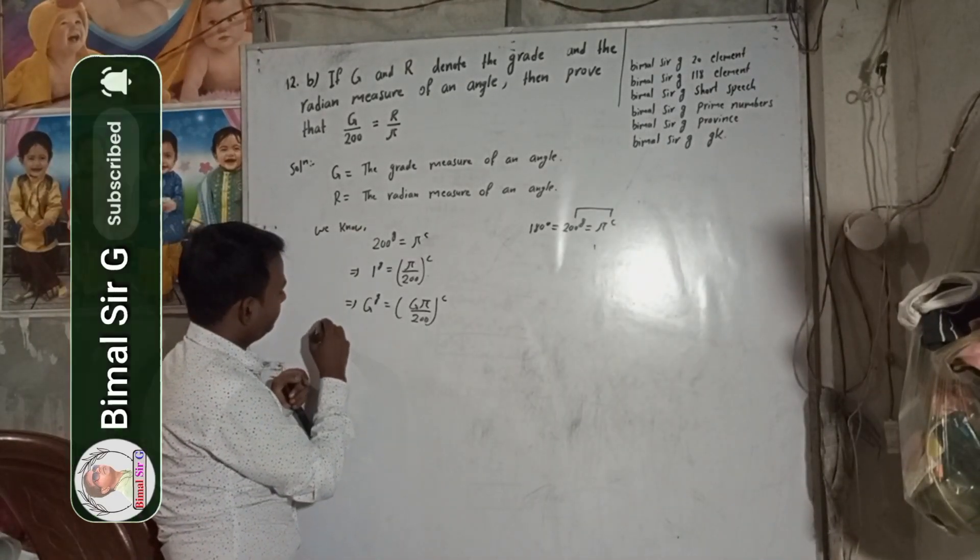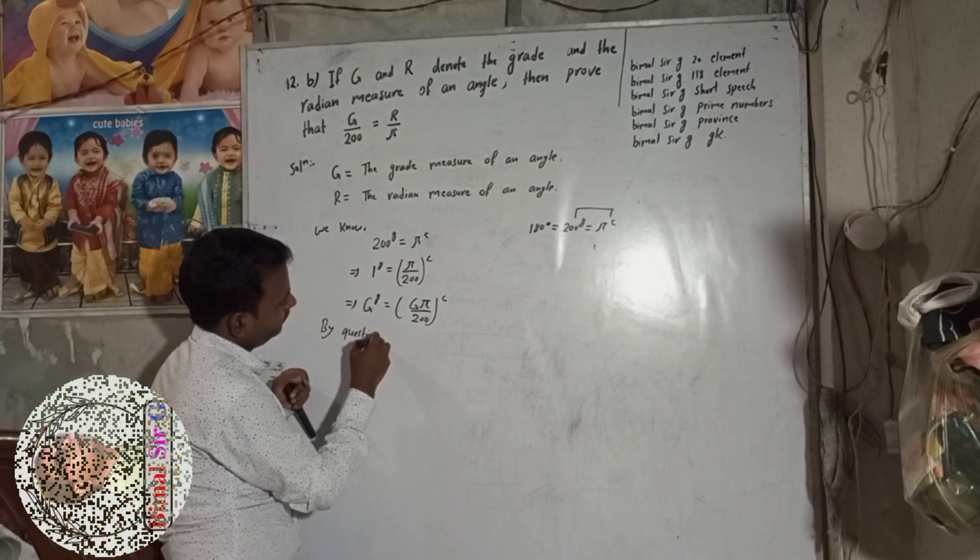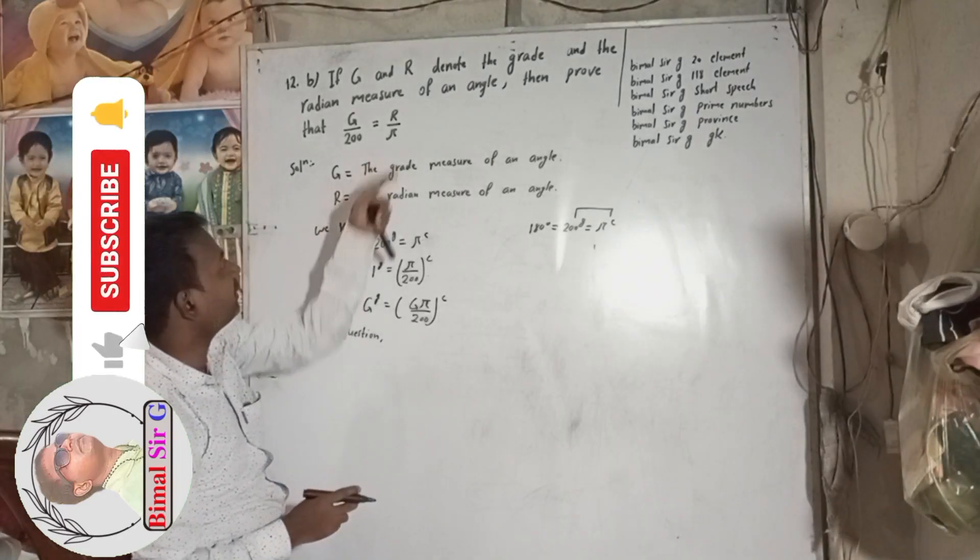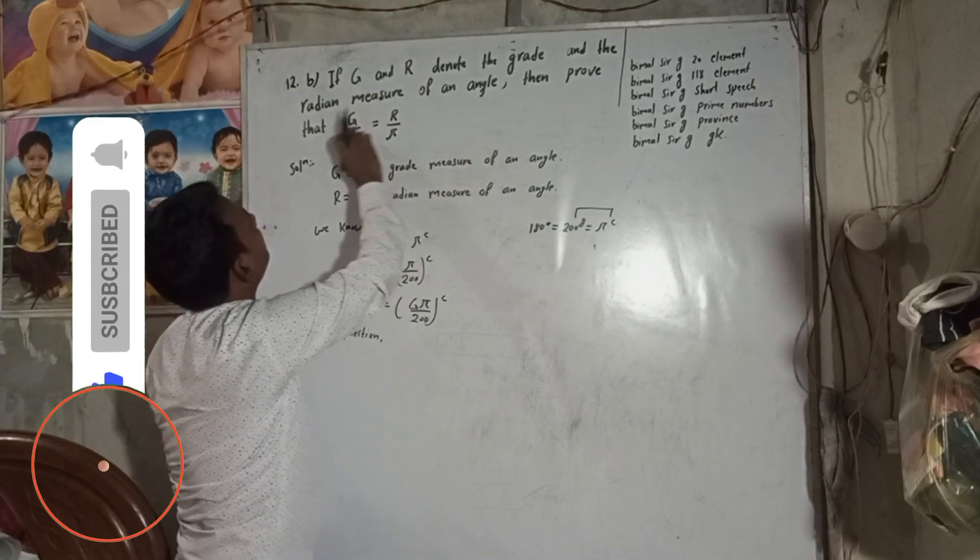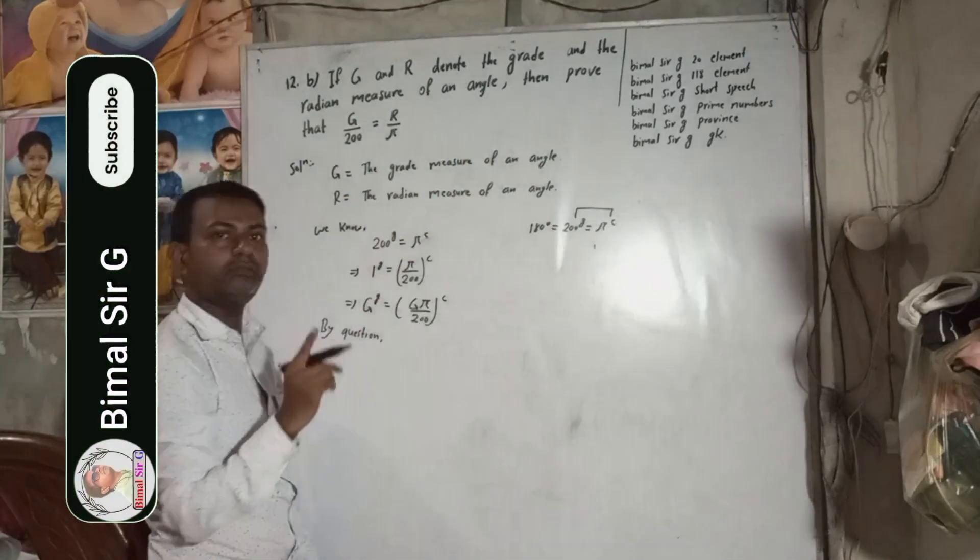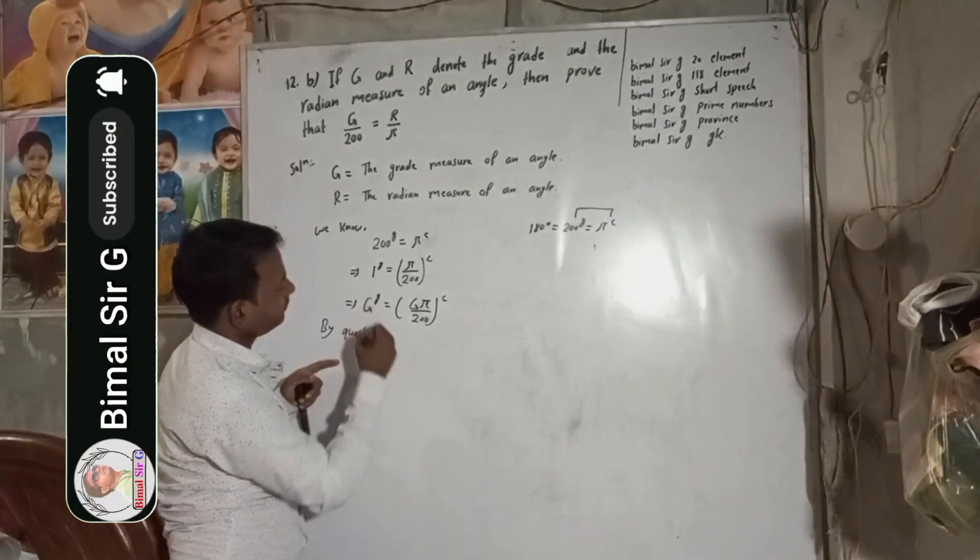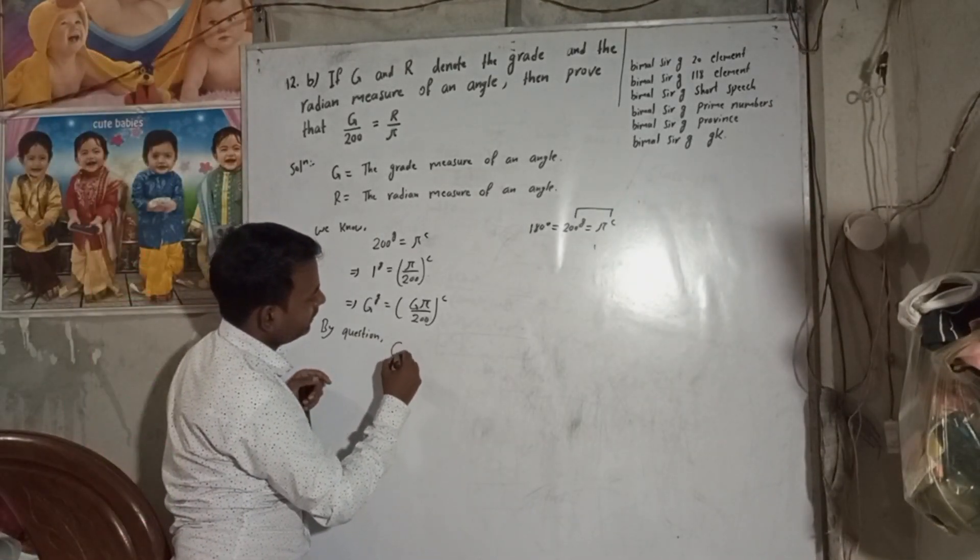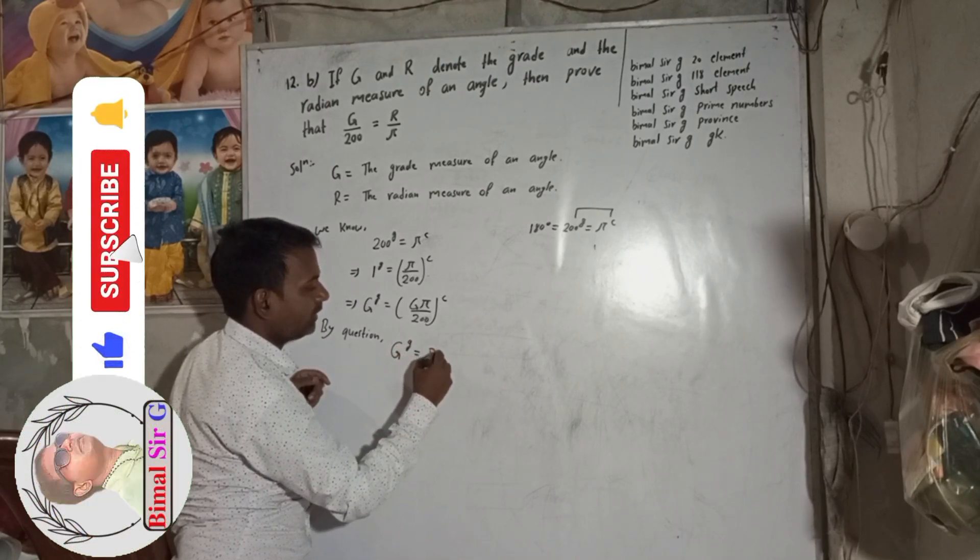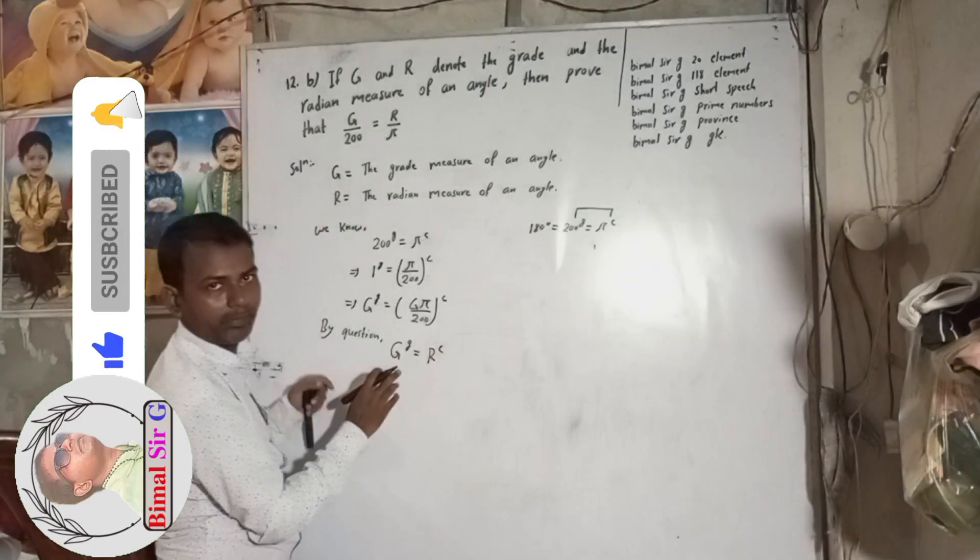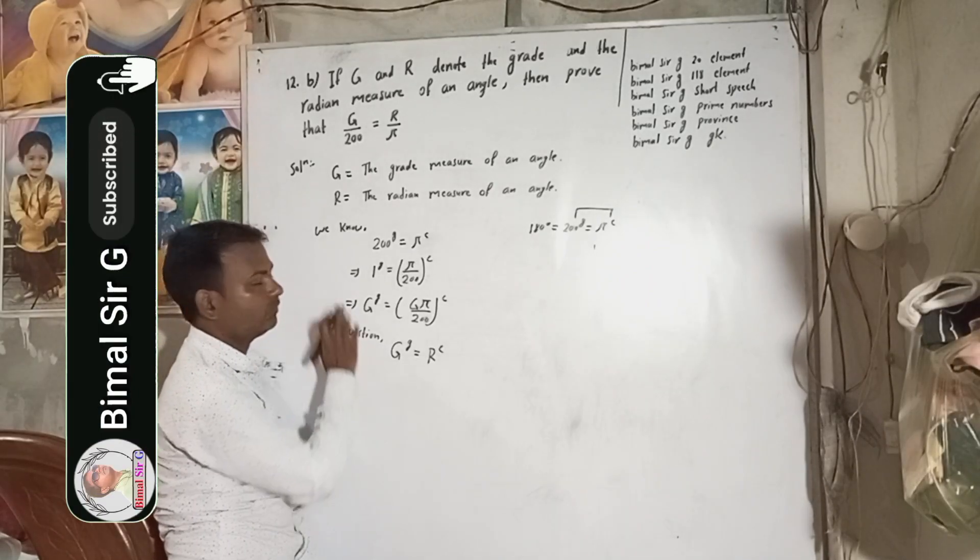Now, my question. What does the question tell? That G and R denote the grade and radian measure of an angle. That means one angle, single angle, same angle. It means G grade is equal to R radian. Same angle means G grade is equal to R radian. This is the relation by the question.